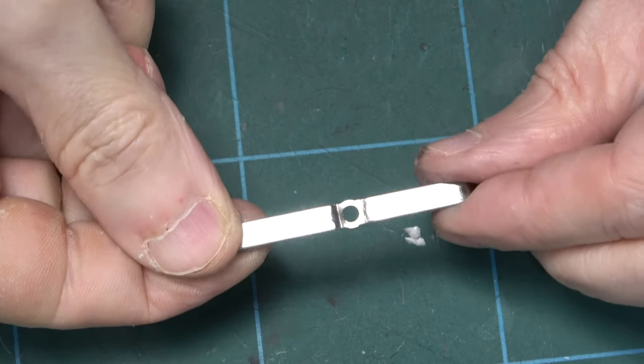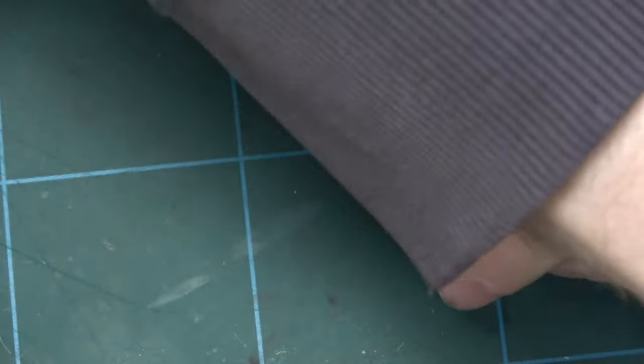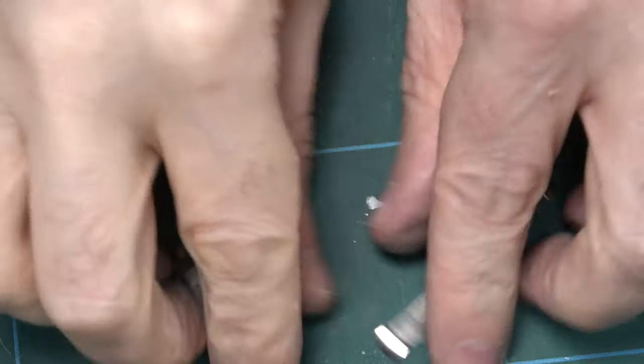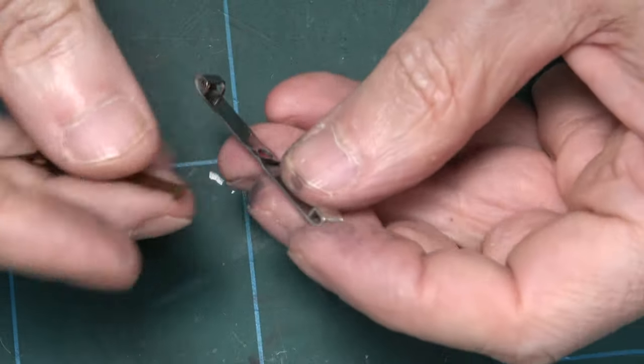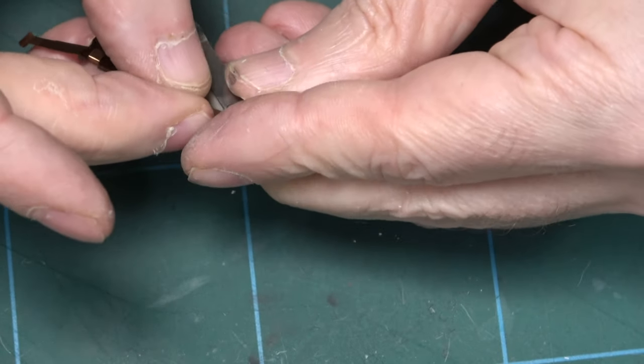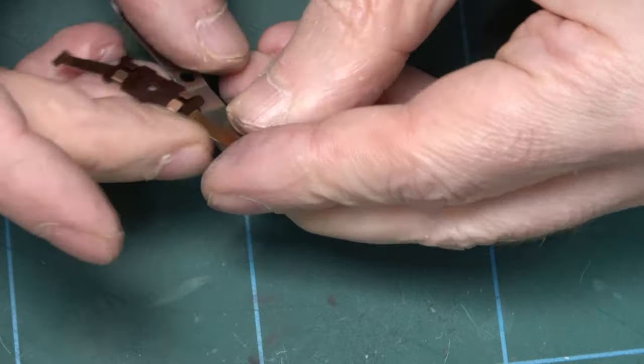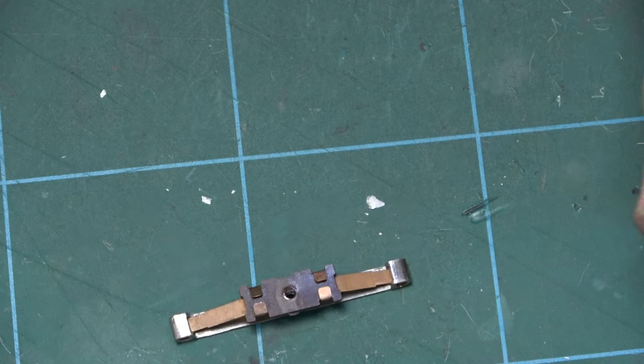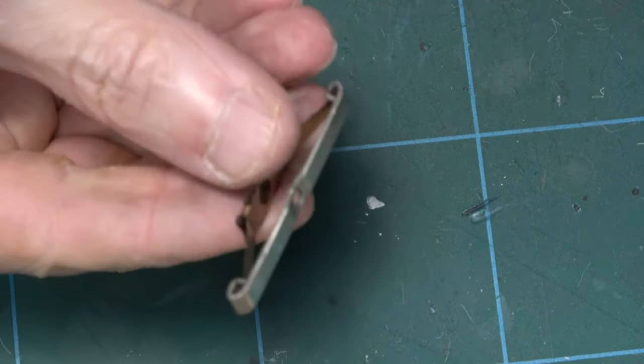All I need to do now is to reassemble the pickup shoe and this bit should be easier than the disassembly. Well, sort of. It still requires a bit of care to avoid bending the spring or other parts. But not complicated. There we are. Nice, isn't it?